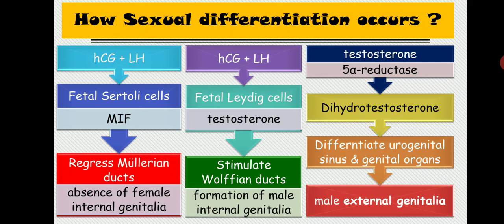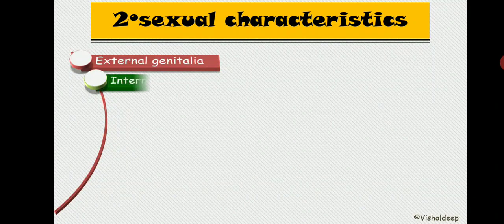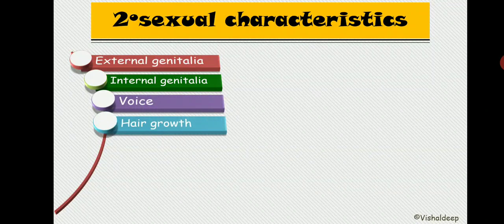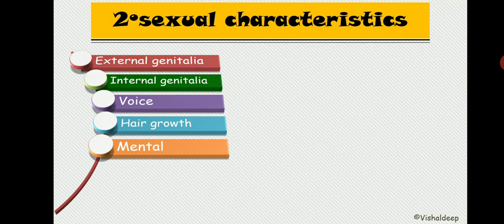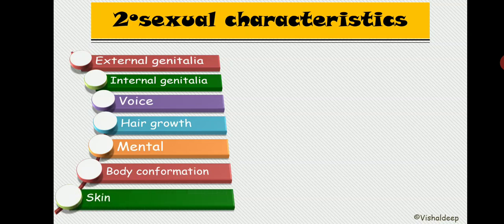All fetuses have the potential to develop both male and female internal and external genitalia. Female development occurs when stimulating factors — MIF, testosterone, and dihydrotestosterone — are absent. After puberty, testosterone is responsible for secondary sexual characters, including changes in genitalia, voice, hair growth, mental state, body configuration, and skin.